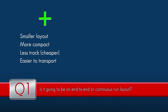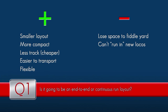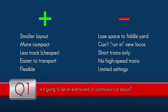End-to-end layouts are definitely easier to transport even if you have a really big one. They're flexible and can be made to fit into almost any space — not just a rectangle, it could be an L-shape or almost any shape. However, there are disadvantages: the fiddle yard can take up a significant chunk of the available space, it can't be used to run trains in, it can be very difficult to run prototypical length trains, it's almost impossible to get trains up to high speed, and the variety is usually not as great as with continuous run layouts.